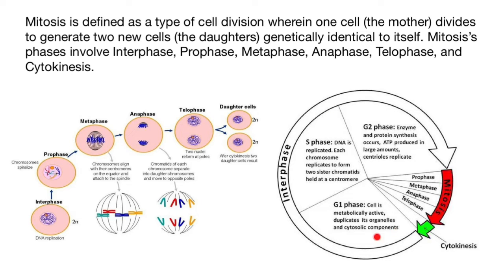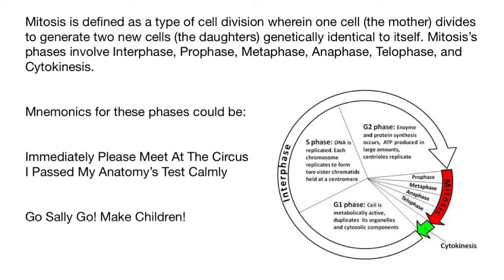It looks like you have to spend a lot of time to memorize all these phases, and especially the order in which they go. But actually not. Today, I'm going to show you a mnemonic technique which is going to take you 10 seconds to memorize all these phases and the order in which they go. All you have to do is memorize one sentence — for example: 'Immediately, please meet at the circus.'